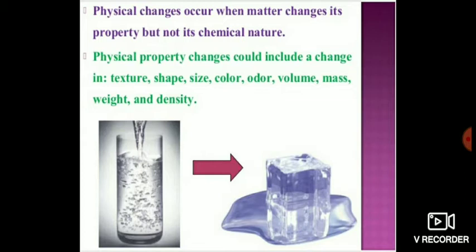It changes its property — that means shape, size, volume, mass, or density — but not its chemical nature. Another example: melting of ice. Here, only the solid is changing into water, or solid is changing into liquid. Earlier also it was water, and the liquid is again water. That means the properties of water remain the same. The water is still having the same taste or the same properties. There is no new substance formation.